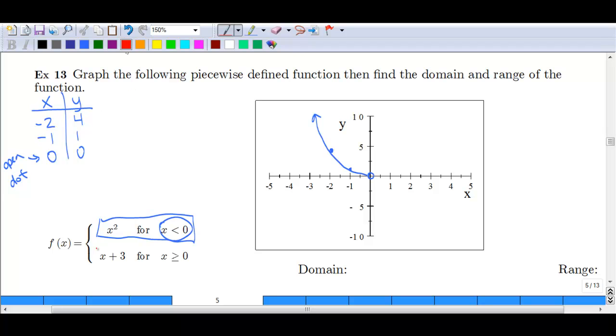Now, if we look at the second piece of the graph, x plus 3 for x is greater than or equal to 0. Again, we can plot a few points. This one's even easier than the last one as it's a linear function. Again, we want to start with that differentiating point, that middle point, that 0.